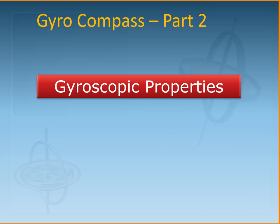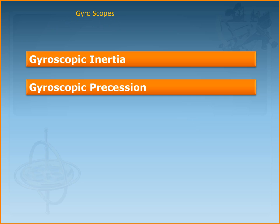So let's start with understanding the two main properties of a gyroscope that help convert the gyroscope into a gyro compass. The first property we'll be talking about is gyroscopic inertia, and the second one will be gyroscopic precession. Let's start with gyroscopic inertia first.